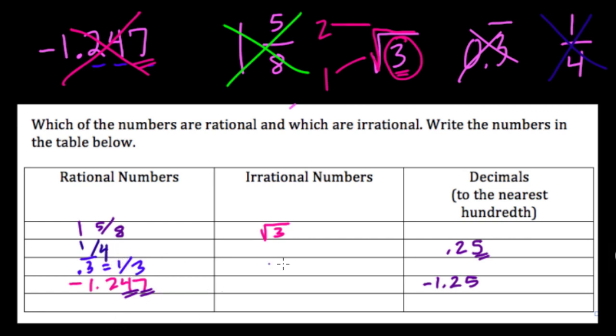Here with this decimal, 0.3 repeating, it's just going to be 0.33, right? And moving on, we have two more to go.